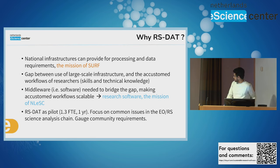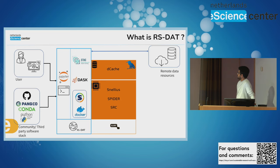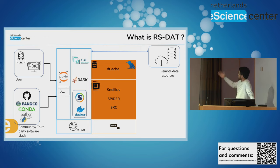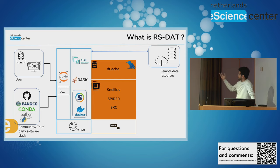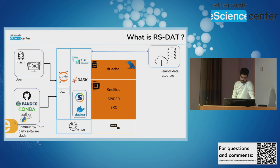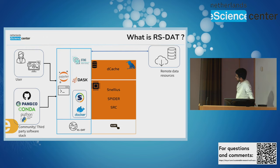RSDAT was a pilot project that ran for roughly one year, and we've come up with some tools that can be used. Here is a graphic made by Merit. On the left side we have the users and communities that generally work with geosciences datasets. On the right in orange we have the various hardware facilities provided by Surf — for example, the dCache for data storage and usage, the high performance computing infrastructure such as the Snellius computer, Spider, and the Surf Research Cloud. With RSDAT we have created what you see in blue, a so-called middleware, which helps users access the Surf hardware in an easy and more usable way.